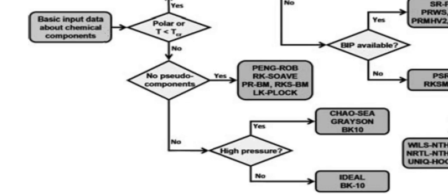We will start from here: first, we need to provide the basic input data about chemical components. When we start Aspen, the first thing we do is select the component list. So we need to establish what the basic chemical components are and what inputs are required regarding the components. The second thing we need to check is whether these components are polar or non-polar.